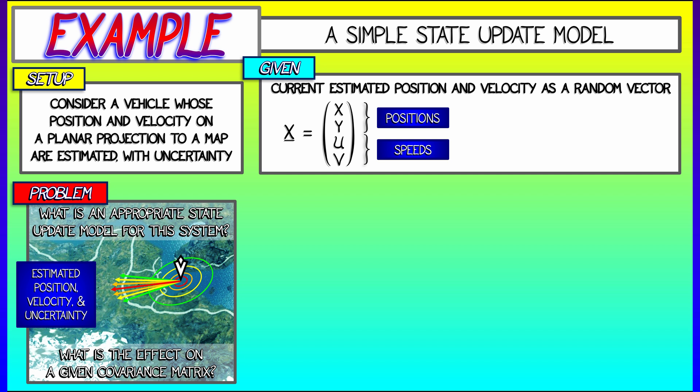Call those u and v. Now, given this random vector, I have expectations, e of x, and covariance matrix, v of x, respectively.